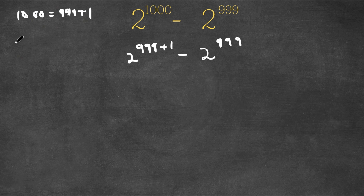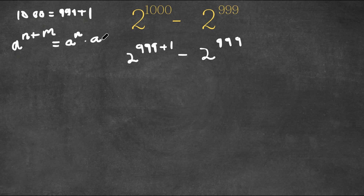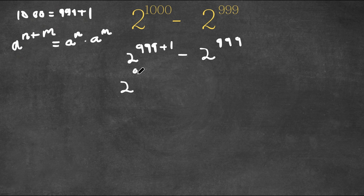So now if we have something in the form A to the power of N plus M, this is equal to A to the power of N times A to the power of M. So in this case, we have 2 to the power of 999 plus 1. Think of 2 as A, 999 as N, and 1 as M. So this would be 2 to the power of 999 times 2 to the power of 1, minus 2 to the power of 999.